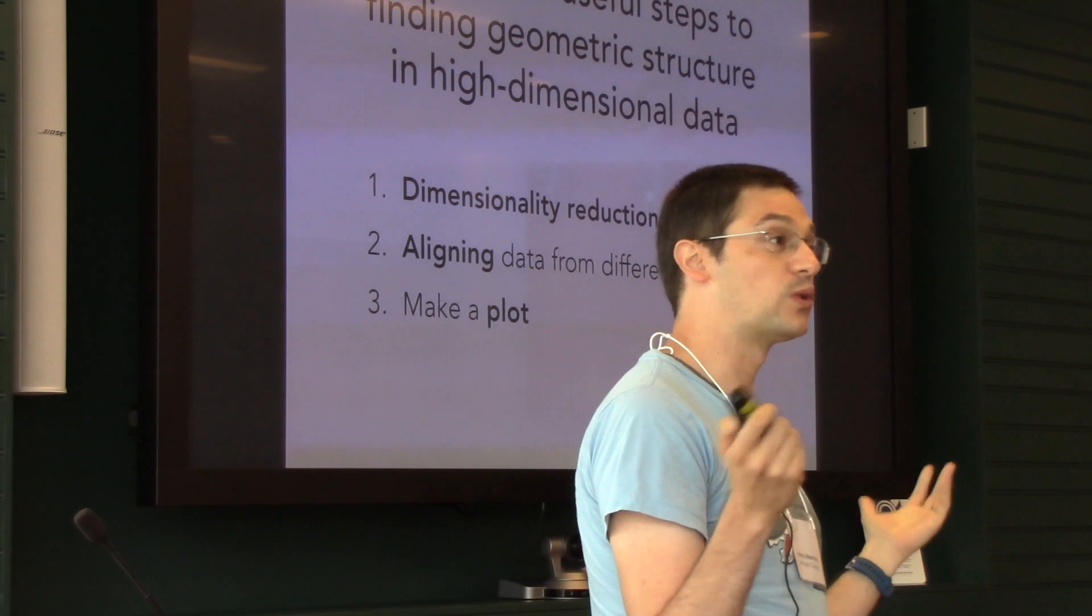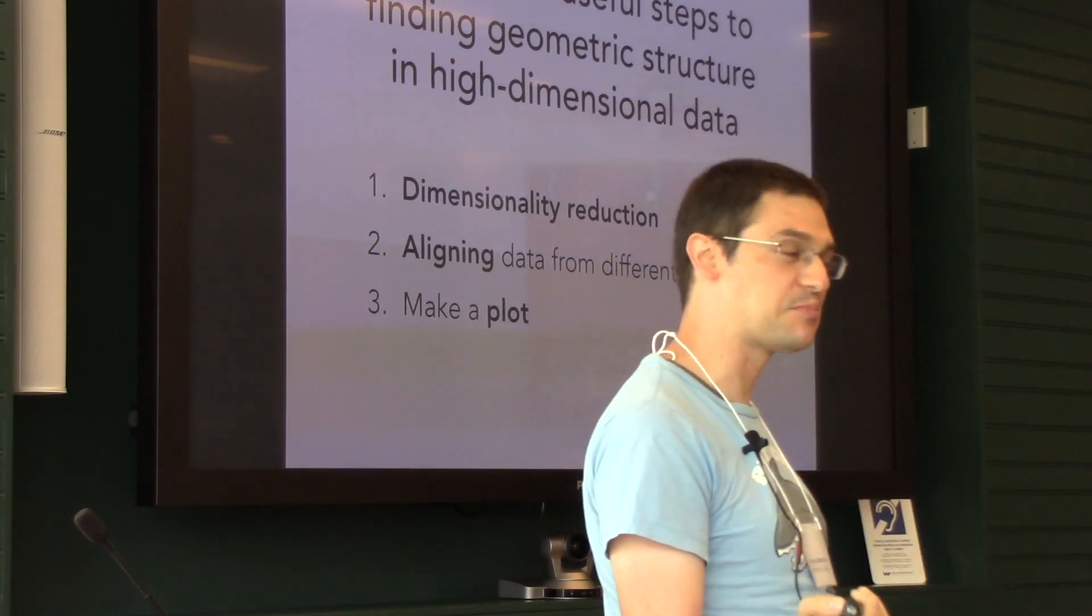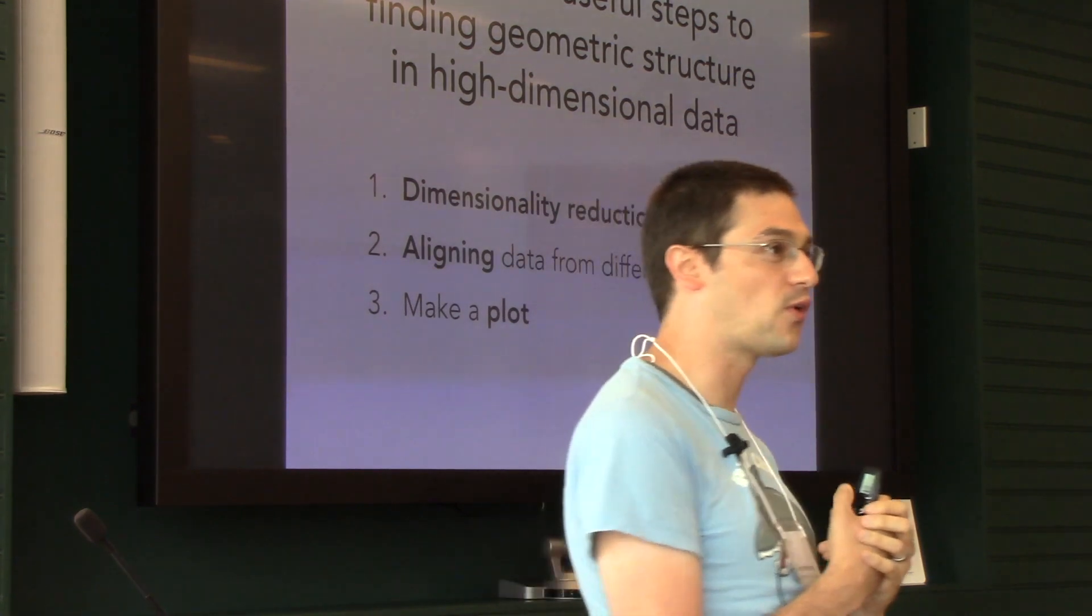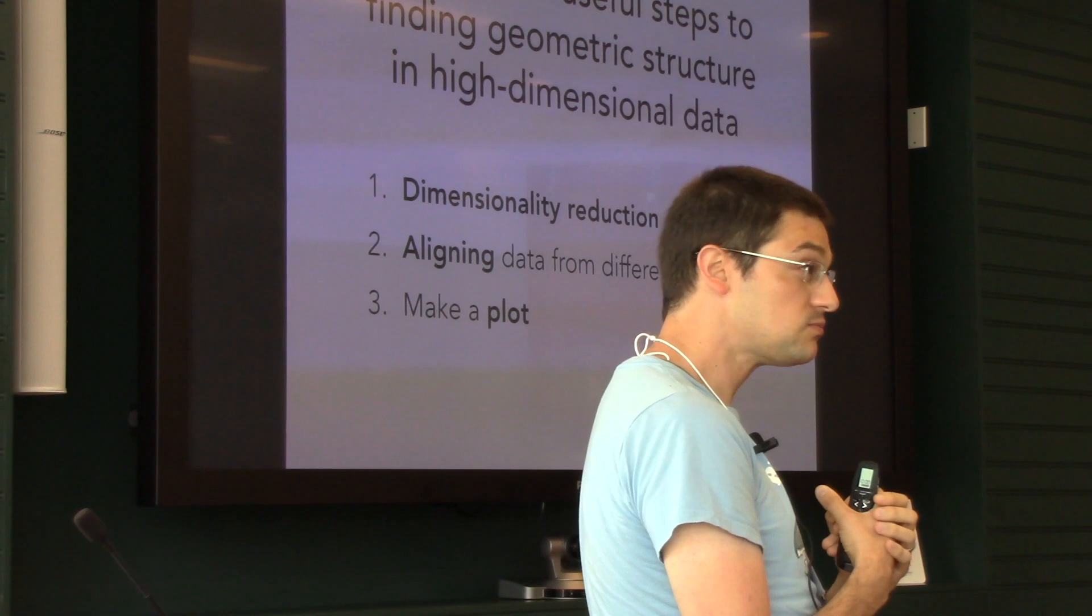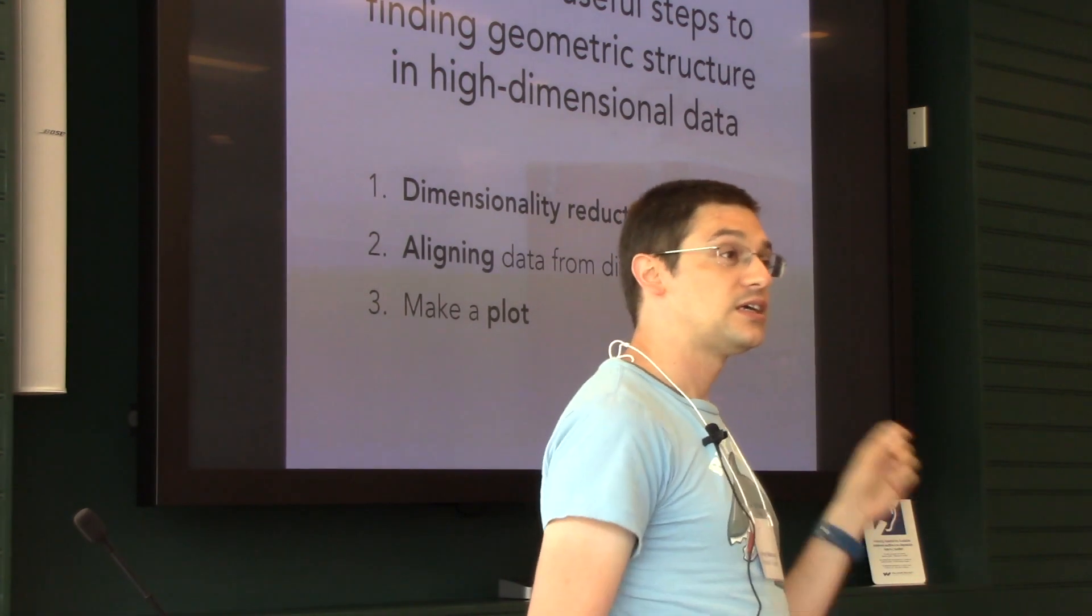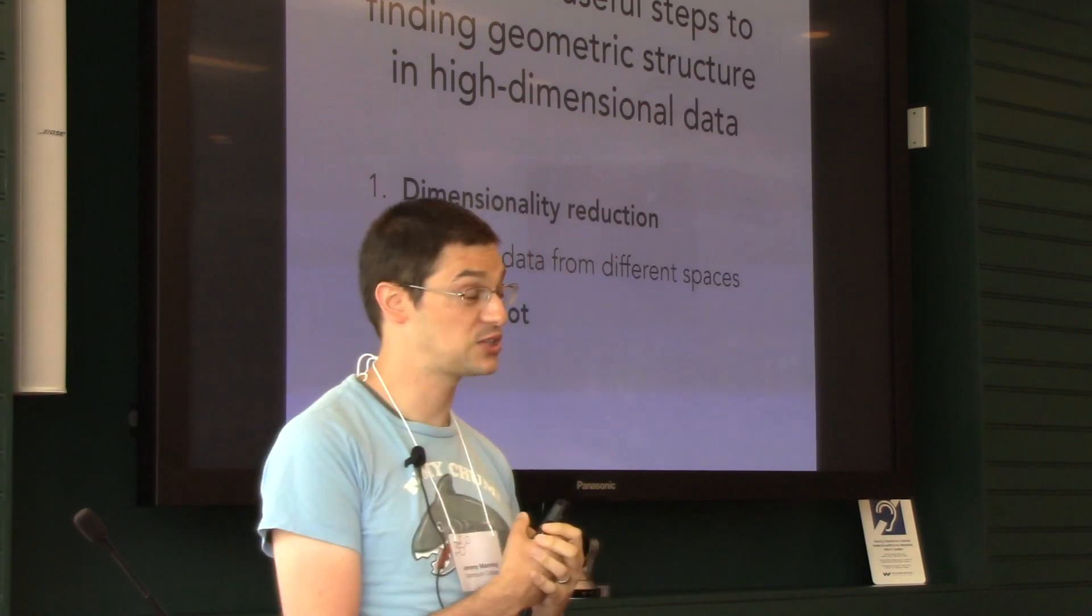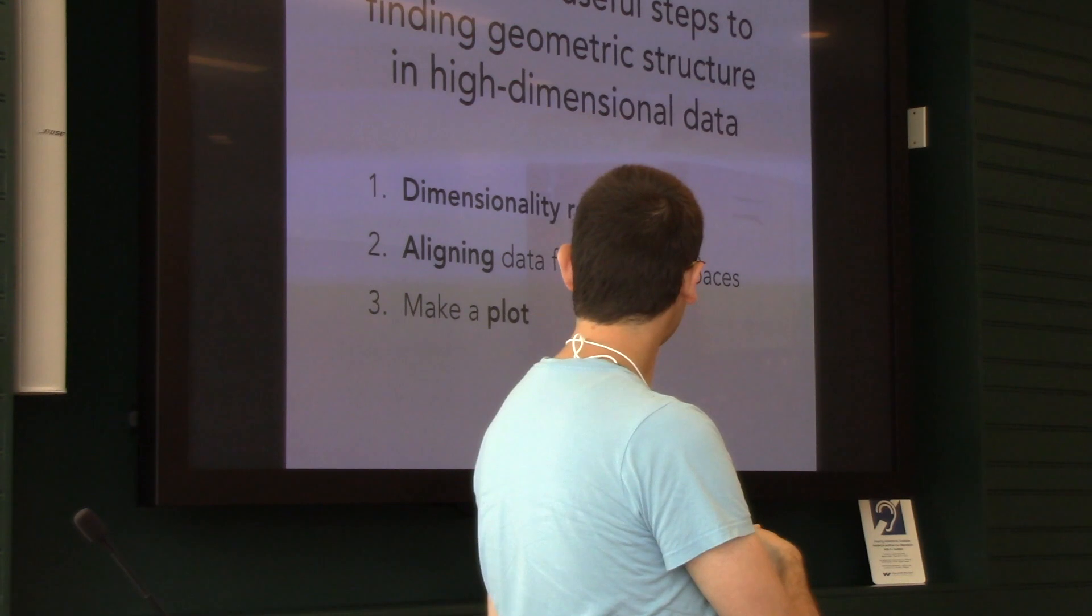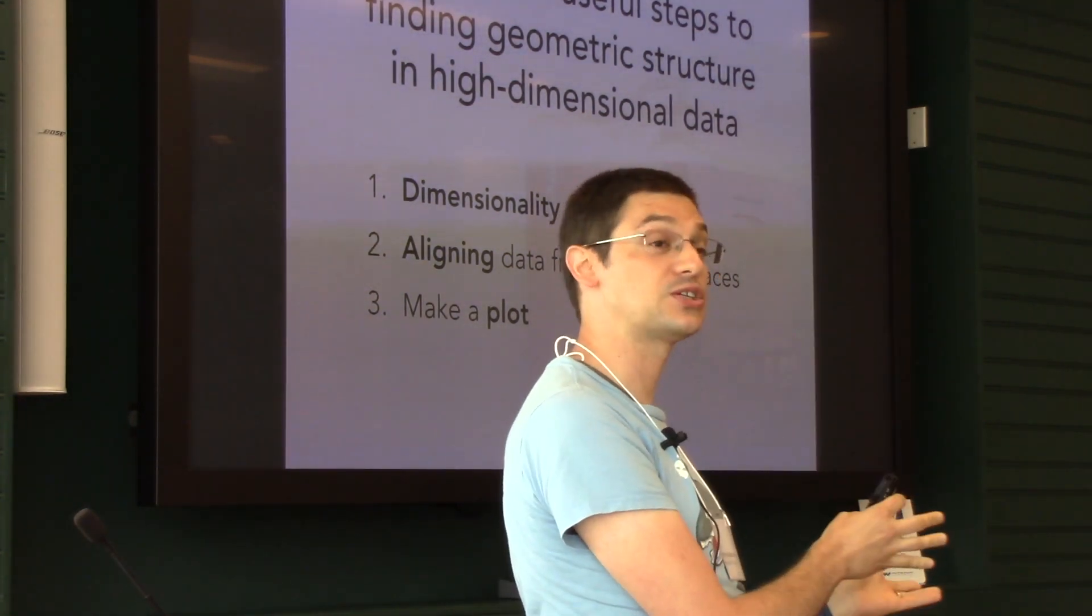These ideas didn't originate in my lab, but we embrace the view that there are three generally useful steps for finding geometric structure in high dimensional data. First, you can take your high dimensional data and project it onto some low dimensional space. There are many algorithms for doing this. So dimensionality reduction—take your high dimensional thing and make it three dimensional so you can visualize it.